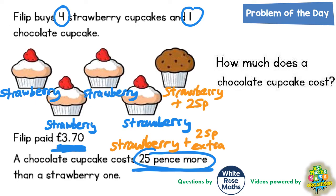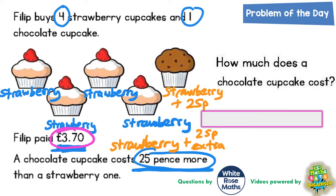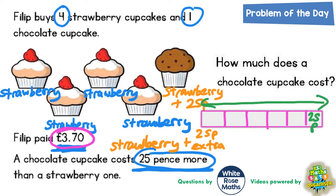The reason for doing this will become clear shortly. We've got five cakes altogether plus this extra 25 pence, so we need to split the bar model into five sections for the five cakes, and then a little section on the end for the 25 pence. We know that the total cost of these five cakes is £3.70, so there's a big arrow across the top showing £3.70 total cost.